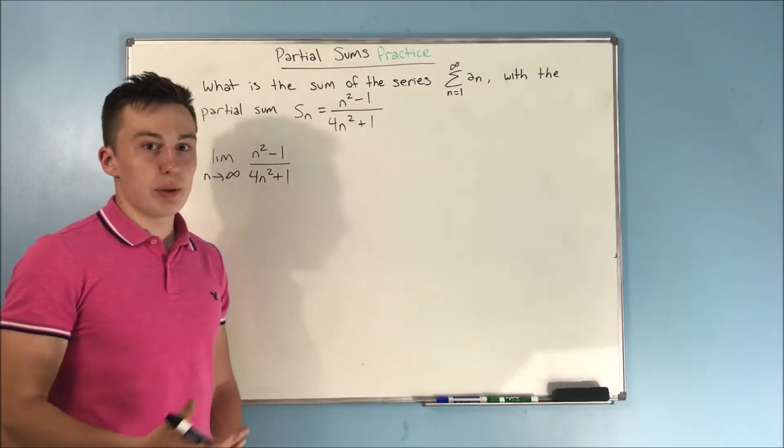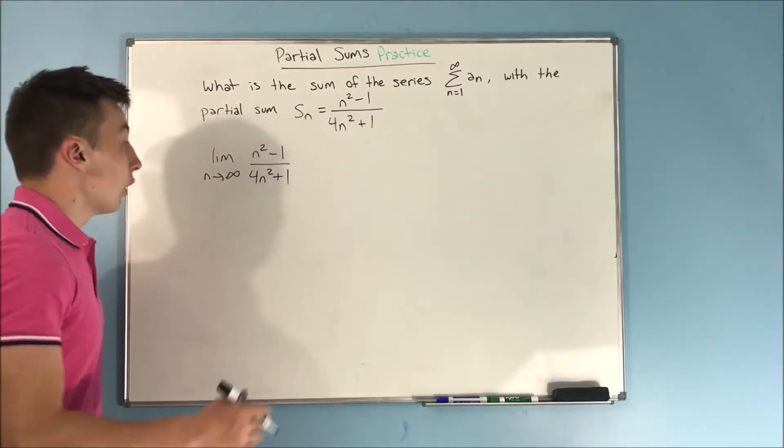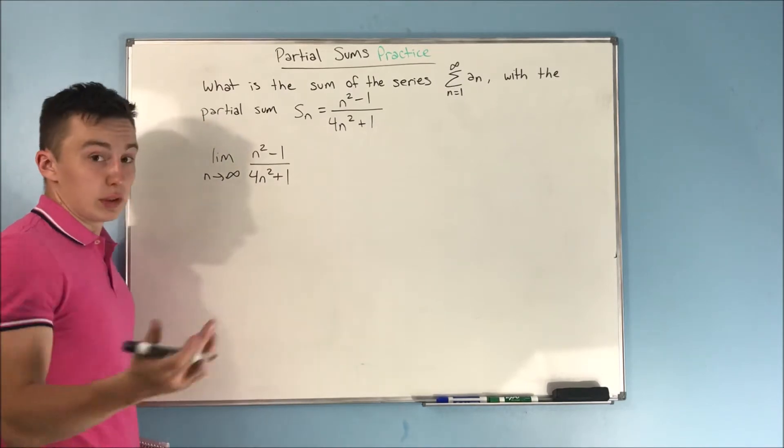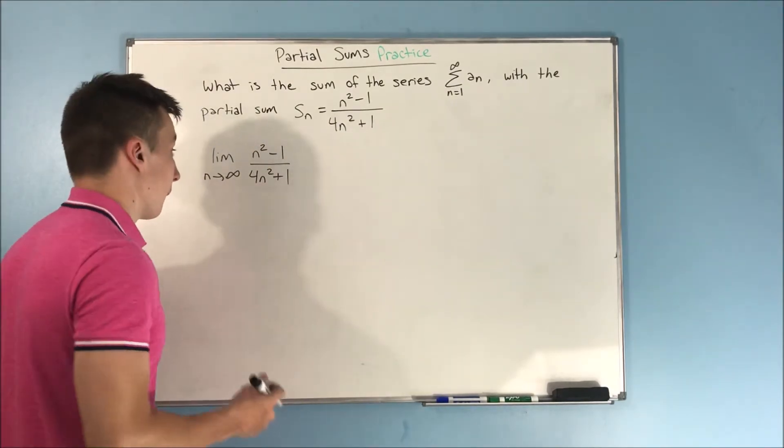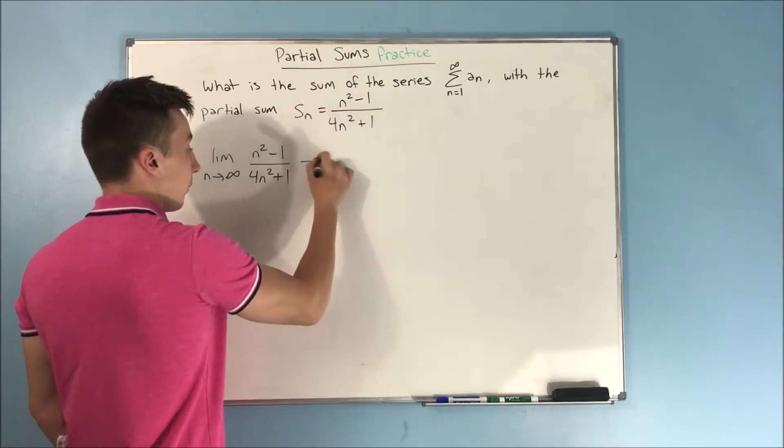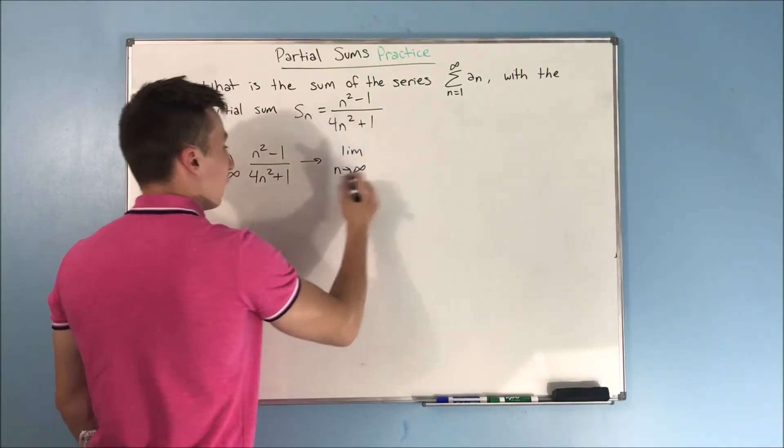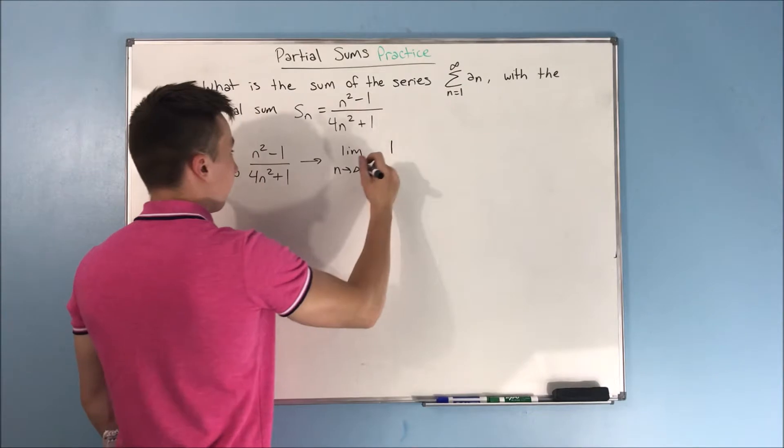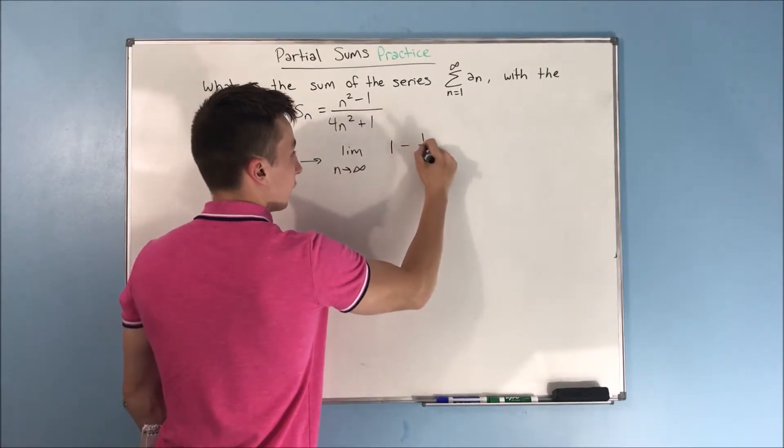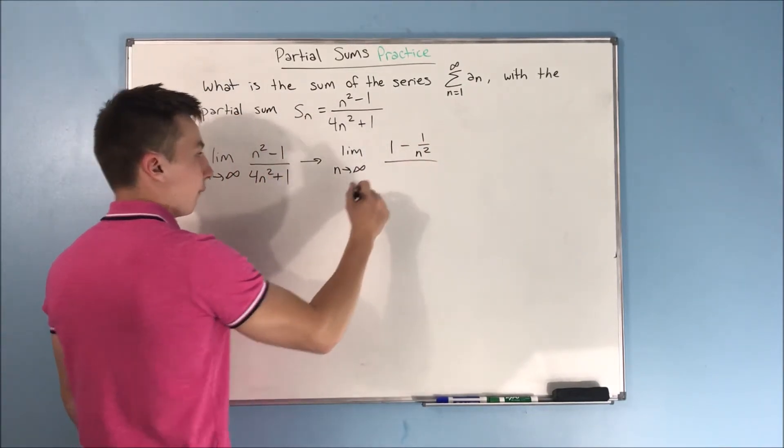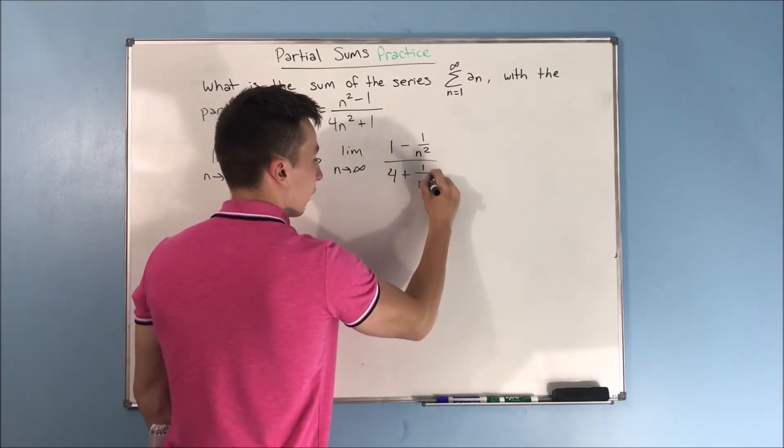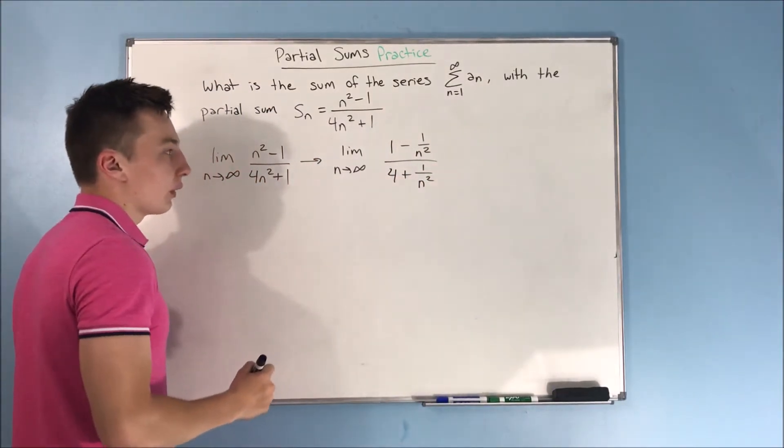This is another limit where you could pretty much do it the L'Hopital way, or you could just divide everything by n squared. So if we divide everything by n squared, we get the limit as n approaches infinity of 1 minus 1 over n squared all over 4 plus 1 over n squared.